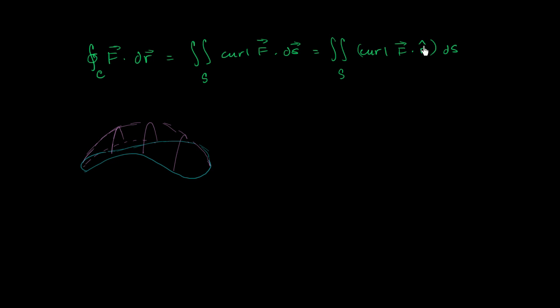When we think about a normal vector to a surface, there are actually two normal vectors. Based on the way I've drawn it here, there could be one that pops outward like this, or one that pops inward. Both would be normal to the surface.